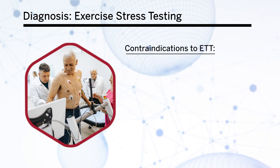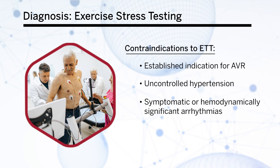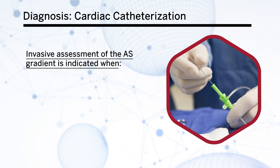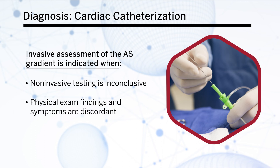Contraindications to exercise treadmill stress testing should also be noted. An established indication for aortic valve replacement, uncontrolled hypertension, symptomatically or hemodynamically significant arrhythmias, and inability to perform the test are some of those. Invasive assessment by cardiac catheterization is indicated when non-invasive testing is inconclusive or there are discordant physical exam findings that do not match symptoms.